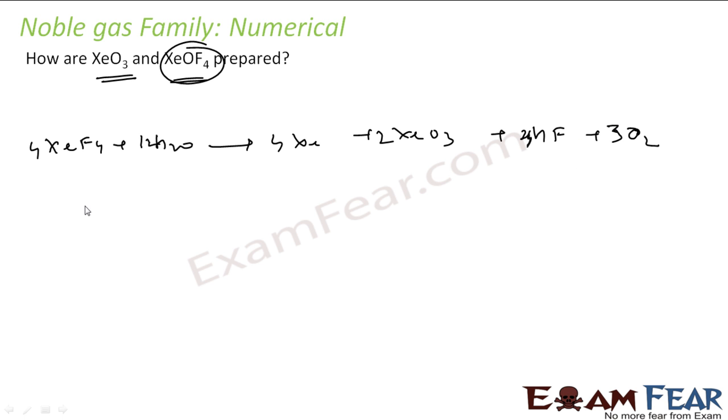And for XeOF4, what you can do is, you can do a partial hydrolysis with water. You get XeOF4 and 2HF. Or you can also prepare XeOF4 by reacting XeF6 with silicon dioxide. You get XeOF4 and silicon tetrafluoride.